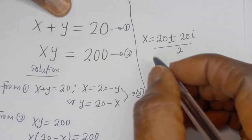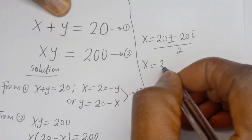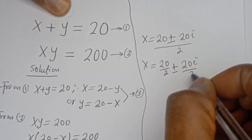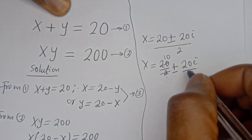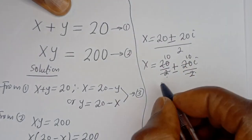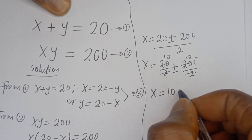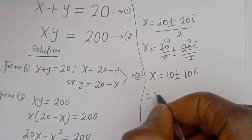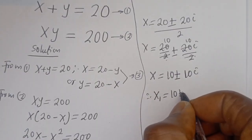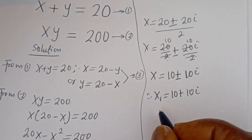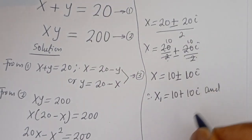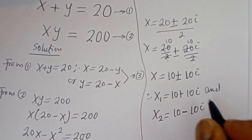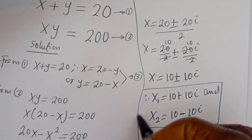So x equals 20 divided by 2 plus or minus 20i divided by 2, giving x equals 10 plus or minus 10i. Therefore x₁ equals 10 plus 10i, and x₂ equals 10 minus 10i. These are the two values of x.